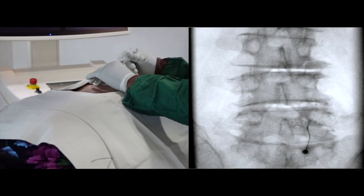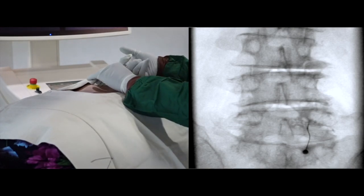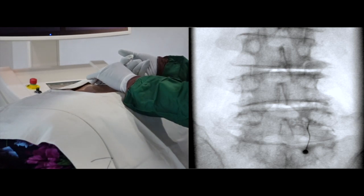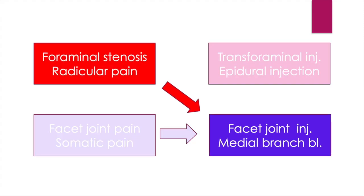It is AP view with arthrogram. I'll administer a steroid mixture containing botulinum toxin. I'll introduce facet joint injection in case of foraminal stenosis. I'll explain my logic of how it works.